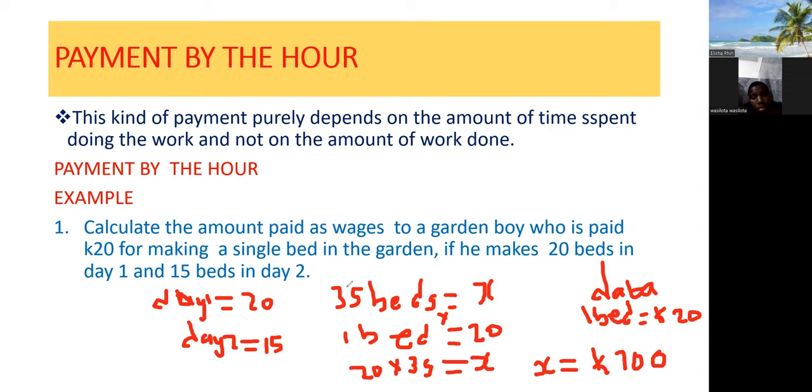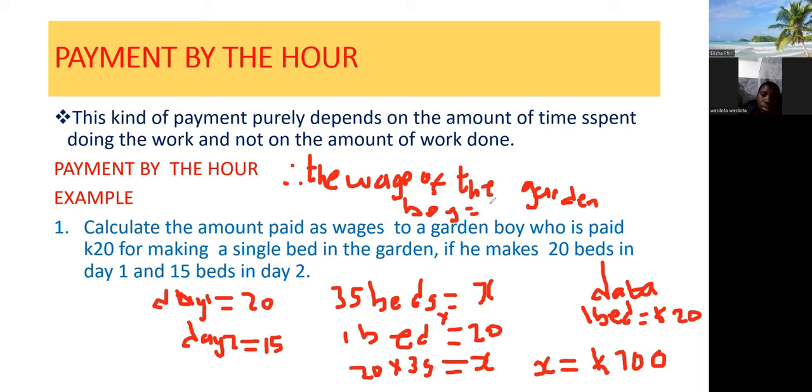So we can say X is equal to 700 kwacha. So we can conclude, since X is equal to 700 kwacha, therefore the wage of the garden boy is equal to 700. And we're done.